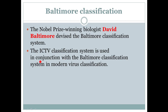The second point is that the ICTV classification system is used in conjunction with the Baltimore Classification system in modern virus classification. This means that in modern virus classification, both Baltimore Classification and ICTV Classification are used together — 'conjunction' meaning combined or joined together.